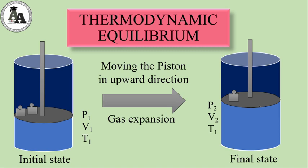When the piston moves and we cannot specify the pressure, volume, and temperature, aisi condition mein system ko thermodynamic non-equilibrium mein kaha jaata hai. Ab yahan par dekho hamaari definition fit ho rahi hai — a system is in thermodynamic equilibrium when its state functions do not vary with time and no heat exchange takes place. Initial state mein system ka pressure P1, volume V1, aur temperature T1 hai. Yahan koi heat exchange nahi ho rahi — no heat exchange.